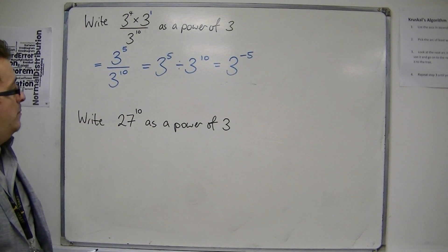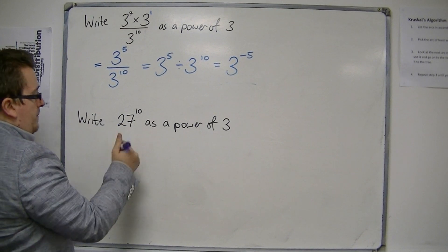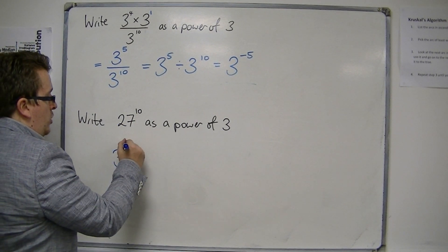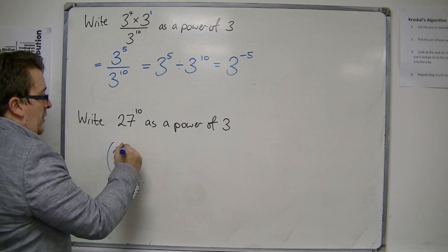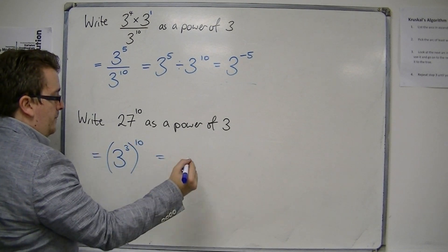The second example here, 27 to the 10. Well, we know that 27 is 3 cubed. So this is 3 cubed to the power of 10. OK, 27 to the power of 10 must be 3 cubed to the power of 10.